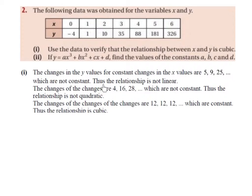The changes of the changes are 4, 16, 28 — these are the second differences. To get from 5 to 9 is a difference of 4. To get from 9 to 25 is a difference of 16, and the next difference is 28, which again are not the same — they are not constant. Thus the relationship is not quadratic.